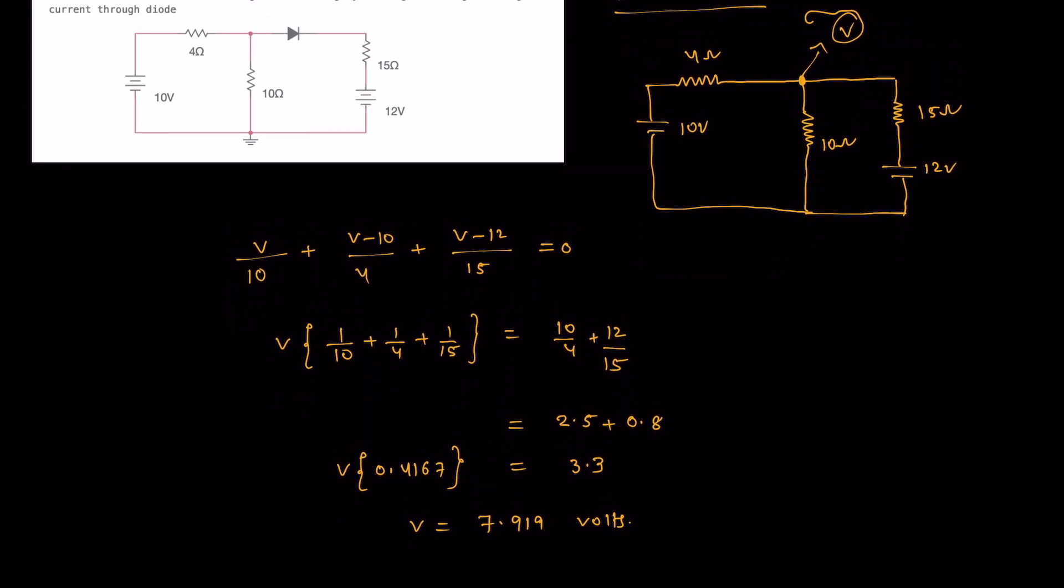If the node voltage V is 7.919 volts, let's calculate I4, the current flowing through the 4 ohm resistor. That is (10 - 7.919)/4, which roughly equals 0.52 amps.